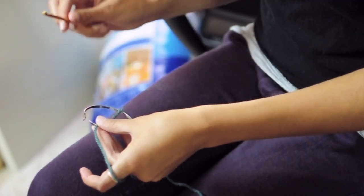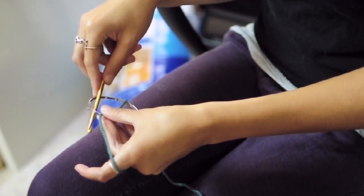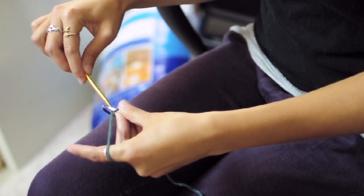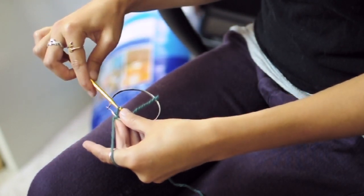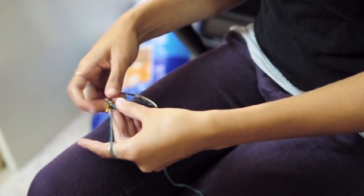So first, take your yarn and place the end in front of the ring, and then putting your hook through the ring behind the yarn, pull the yarn through underneath the ring like that, so you have a loop.